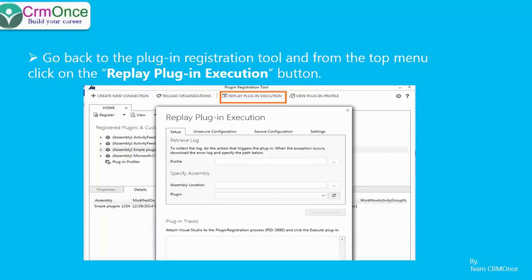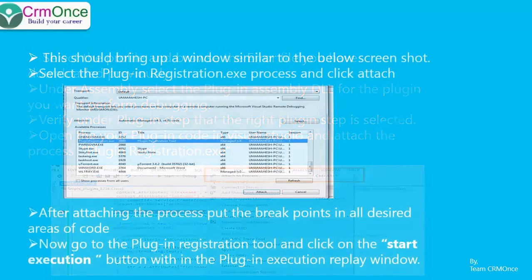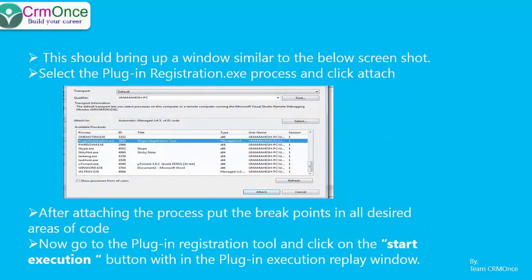Go back to Visual Studio and bring up your plugin code. Under Visual Studio options, click on Tools > Attach to Process. This will list all the processes currently running in the system under your account. Look for the 'plugin registration tool.exe' process — it's right here — and click Attach.